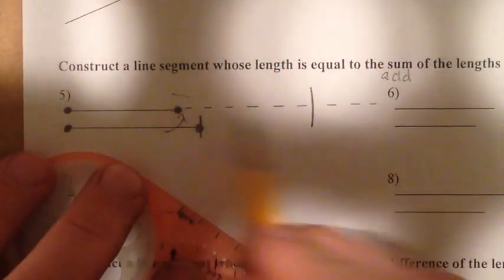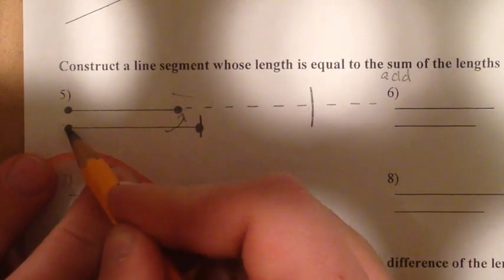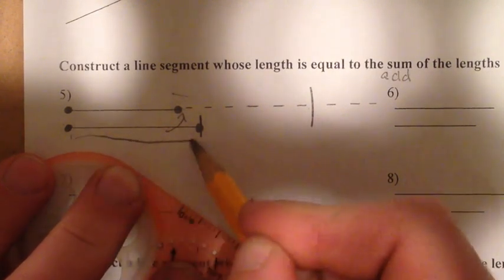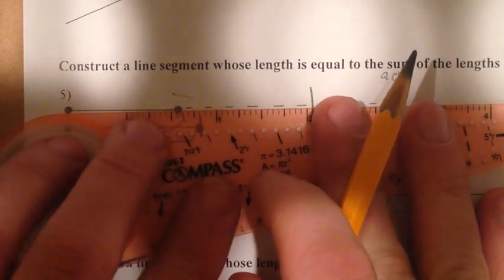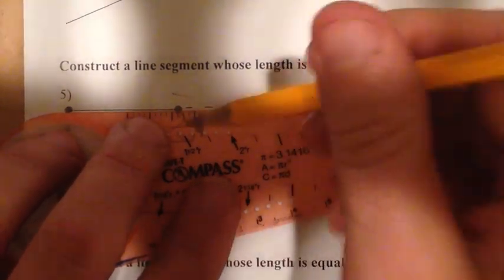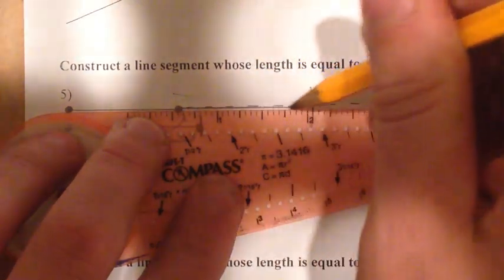So from this point to this arc is the same. It's a copy of this one right here. So then all I have to do is use my straight edge. I'll go along that same line. And there we go.